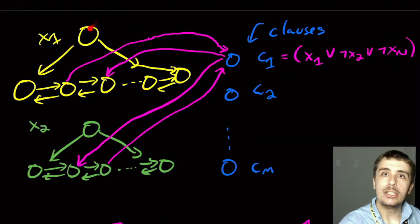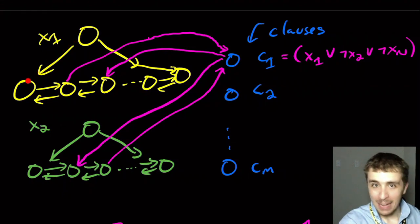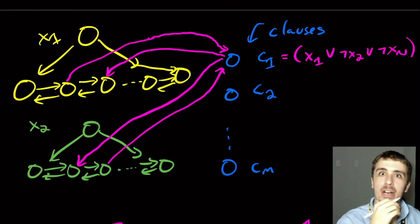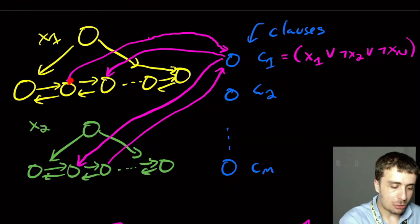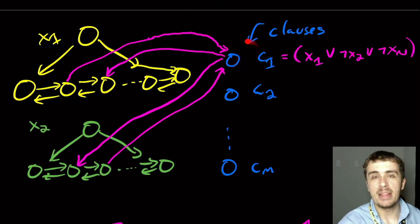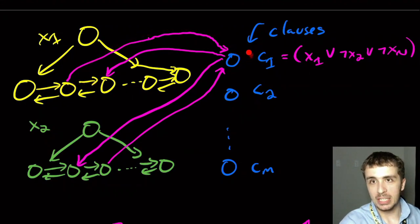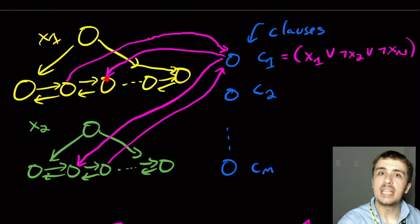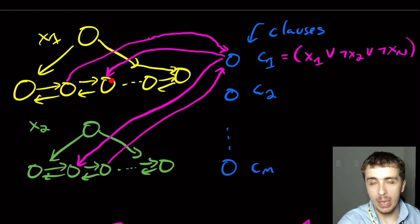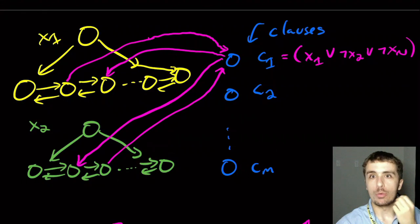In the converse direction: if we have a Hamiltonian path, note there's no incoming edge to the top node, so we must start there. From there we must go left or right, which corresponds to setting each variable true or false. The way we set it up, if a clause vertex c₁ is visited via x₁'s true direction, then x₁ must be set to true — we can't backtrack in a Hamiltonian path. So having a Hamiltonian path implies the formula is satisfiable.